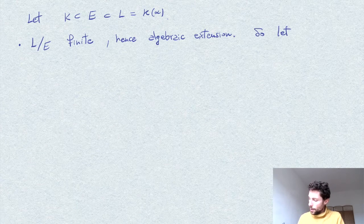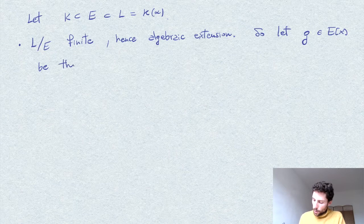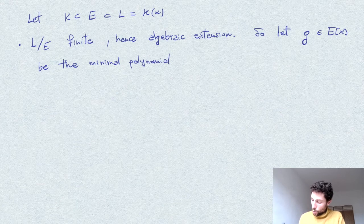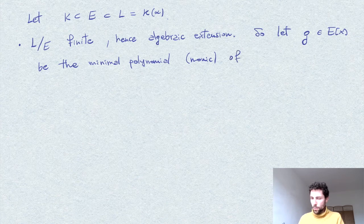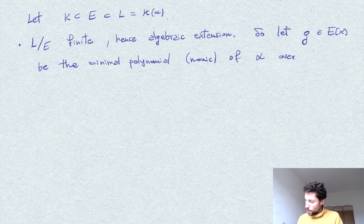We denote by g the polynomial with coefficients in E that is the minimal polynomial of α over E — so in particular it is monic, relative to the extension L over E.